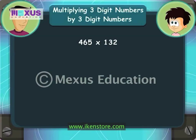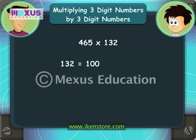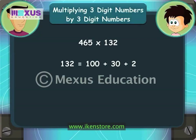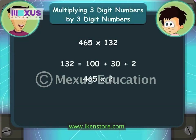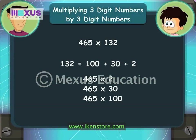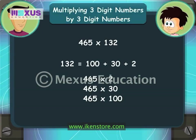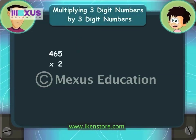Now tell me — how many hundreds do you have in the multiplier? 100. Tens? 30. Units? 2. Okay, first multiply 465 by 2, then by 30, and then by 100. Finally, add all 3 answers and you'll know what 465 multiplied by 132 is. Okay, let's do this!